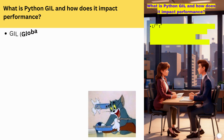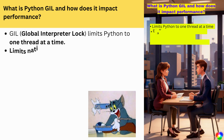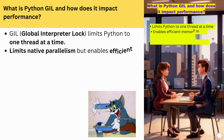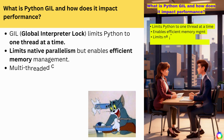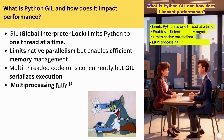What is Python's GIL and how does it impact performance? The GIL (Global Interpreter Lock) limits Python to one thread at a time. This limits native parallelism but enables efficient memory management. Multi-threaded code runs concurrently but the GIL serializes execution. Multiprocessing fully parallelizes computation.